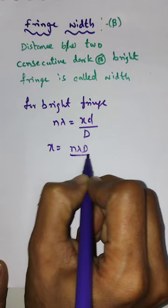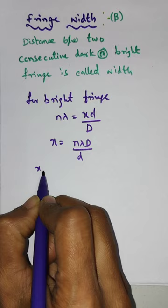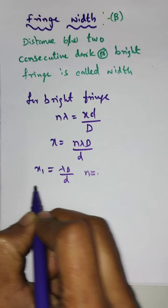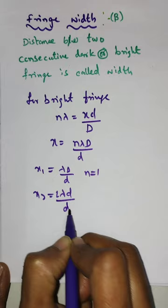x = nλD/d. If you substitute n=1, that is equal to λD/d. If you substitute n=2, we can get 2λD/d. That gives us the positions of two bright fringes.